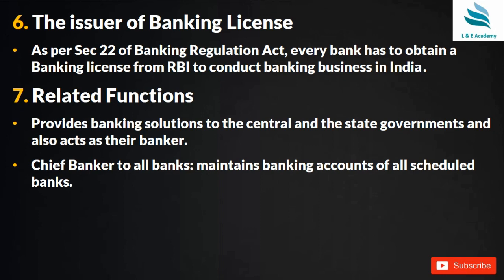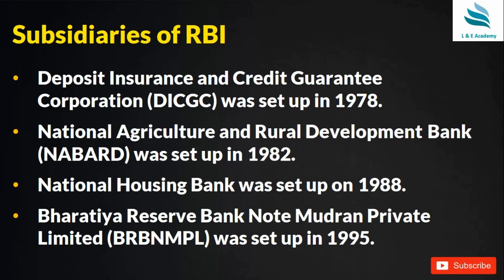The important subsidiaries of RBI include: Deposit Insurance and Credit Guarantee Corporation, set up in 1978; National Agriculture and Rural Development Bank of India (NABARD), set up in 1982; National Housing Bank, set up in 1988; and Bharatiya Reserve Bank Note Mudran Private Limited, set up in 1995.